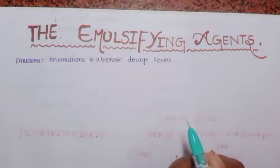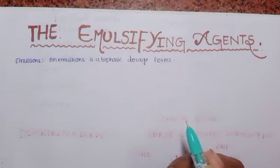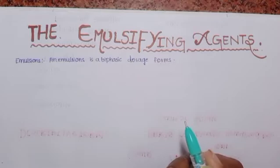Emulsions are of two types. First one is oil in water, and second one is water in oil.